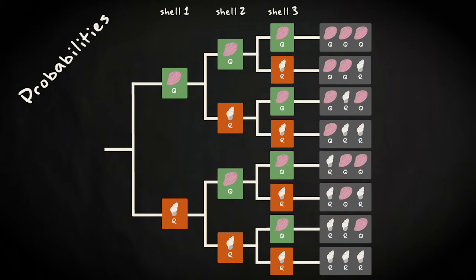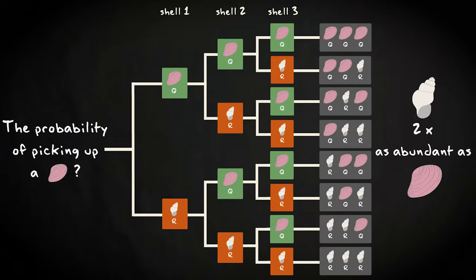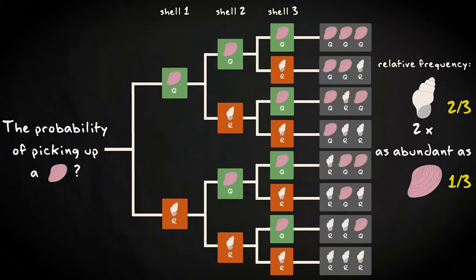Let's now try to assign probabilities to the various events. Let's assume that R shells are two times as abundant as Q shells, while they both occur in large quantities. What would then be the probability of picking up a Q shell? The probability is found by considering the relative frequency of both shells. One out of three shells is a Q shell, and two out of three shells is an R shell. So the probability to pick up a Q shell is one third.